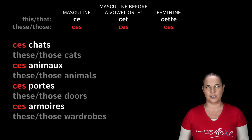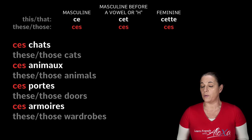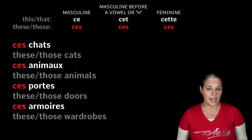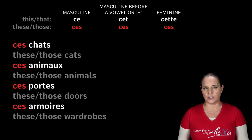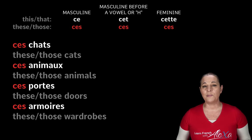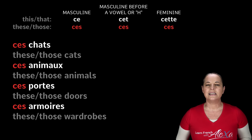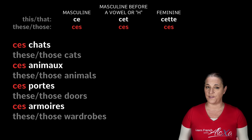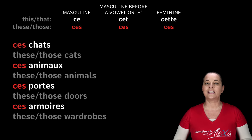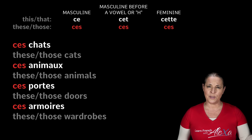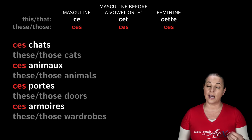You don't have to consider is it plural feminine or plural masculine — no, it's just plural. So ce chat becomes ces chats in its plural form. Portes, which means door, becomes ces portes. And ces armoires — armoire begins with a vowel, but we still use C-E-S. We make the liaison: ces armoires, because armoire begins with a vowel.